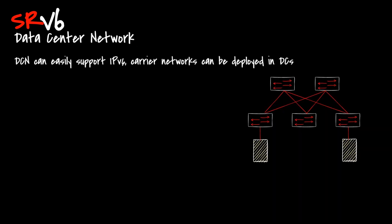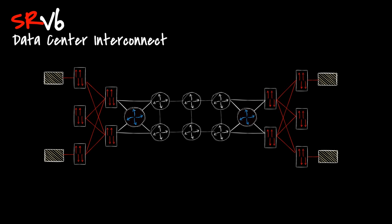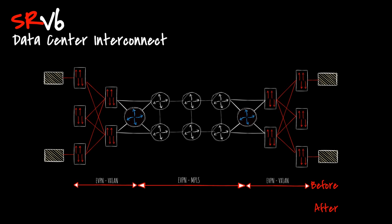In the data center network scenario, SRv6 can easily support IPv6 carrier networks and can be deployed in data centers. In a data center interconnect scenario, the IP backbone network uses MPLS or SRMPLS, while the DCN uses VXLAN. In this case, a gateway needs to be deployed to implement mapping between VXLAN and MPLS, which complicates service deployment without yielding any noticeable benefit — requiring EVPN VXLAN stitching with EVPN MPLS in the core. Because SRv6 has a native IPv6 attribute, both SRv6 and common IPv6 packets share the same packet header. SRv6 can implement communication between networks by leveraging only IPv6 reachability, breaking the boundaries between carrier networks and the DCN for data center interconnect.